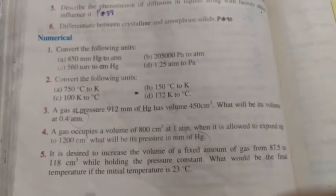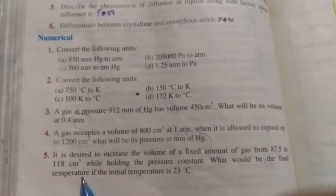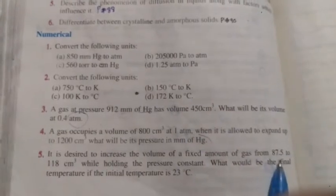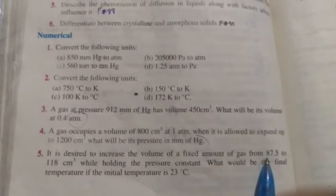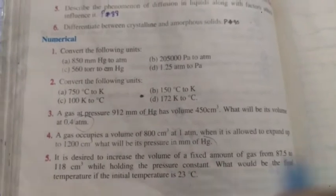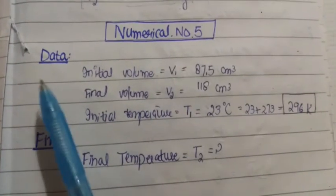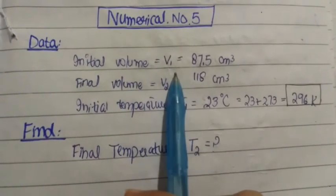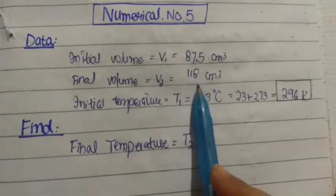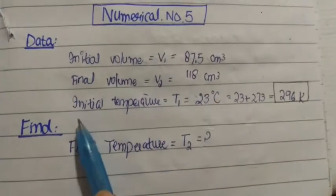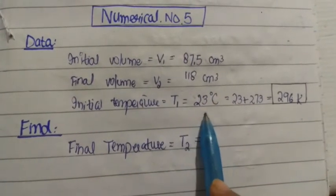What would be the final temperature if the initial temperature is 23°C? Initial temperature is 23, so what final temperature do we need to provide so that the volume increases? Initial volume and final volume are given, pressure is constant, initial temperature is also given. We need to find final temperature because by increasing temperature, volume will increase.